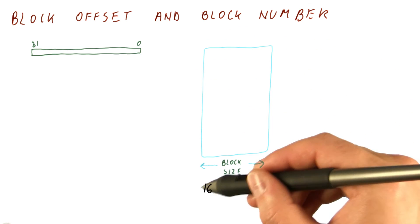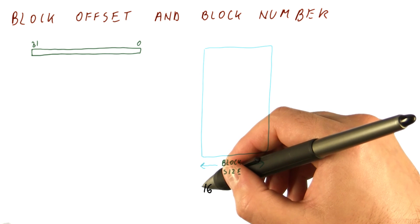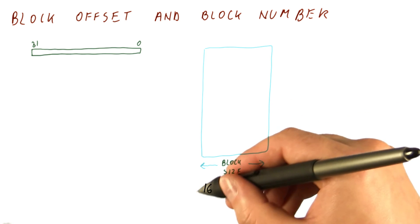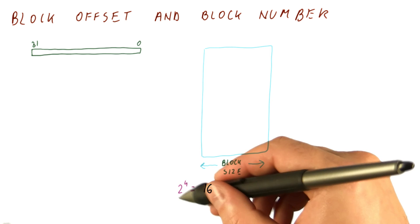With a block size of 16, we need to determine how many bits tell us where in the block we are. The block has 16 bytes, 2 to the 4th is 16, so we need 4 bits to tell us where within a block we are.